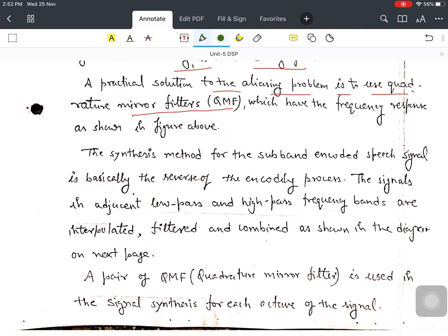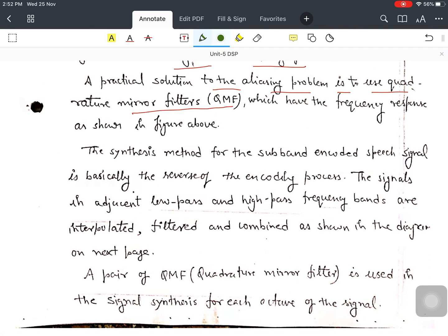Now, the synthesis method for the subband encoded speech signal is basically the reverse of the encoding process. The signals in adjacent low pass and high pass frequency bands are interpolated, filtered, and combined as shown in the diagram. Basically three steps: interpolated, filtered, and combined.